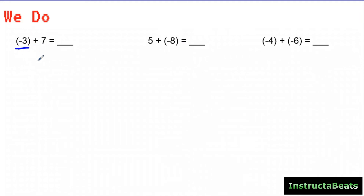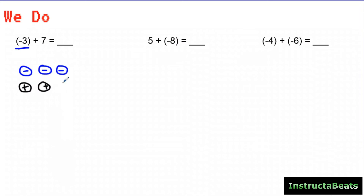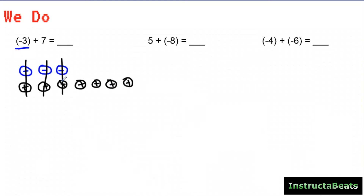First, I always start with my first addend — I have negative three, so I need three negative charges. Then I'm going to add seven positive charges to that. Now when I look at this, I can cancel these out — those all made zero pairs — and I'm left with four positive charges. So negative three plus seven would be positive four.